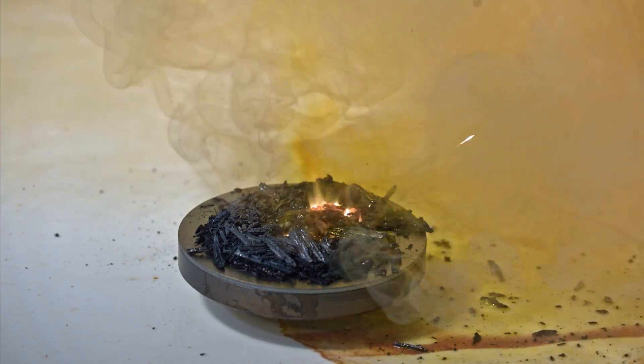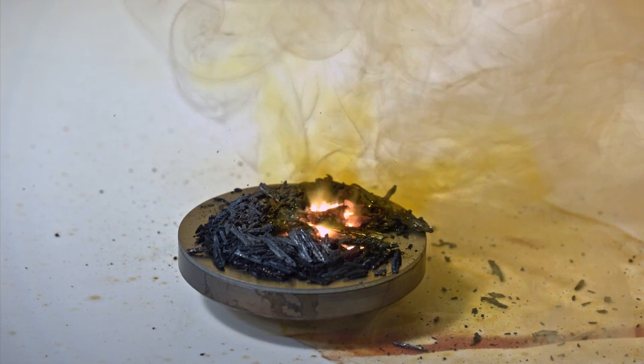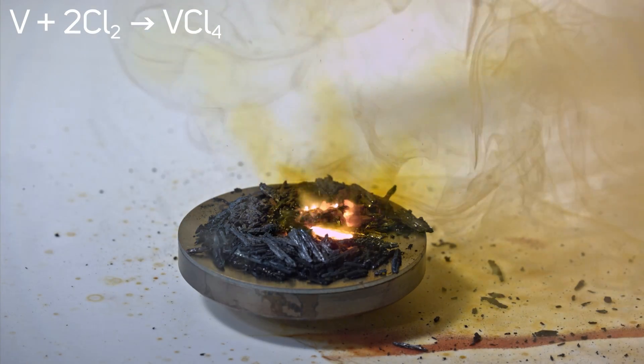Hey guys! When vanadium reacts with chlorine, the main product is vanadium tetrachloride, visible as brown fumes near the reaction flame.